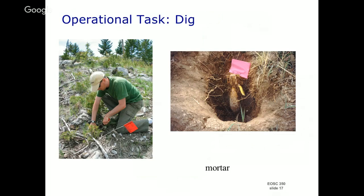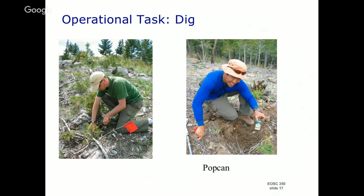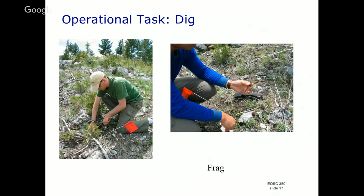So you find the target, dig it up, and you've got a mortar — a 76mm fuse. But just because you find something magnetic doesn't mean it's what you're looking for. It could be an old Kokanee beer can made of tin that has a magnetic signature. The geophysics doesn't actually distinguish — it found something that was magnetic, which could have been a bomb or something else entirely.